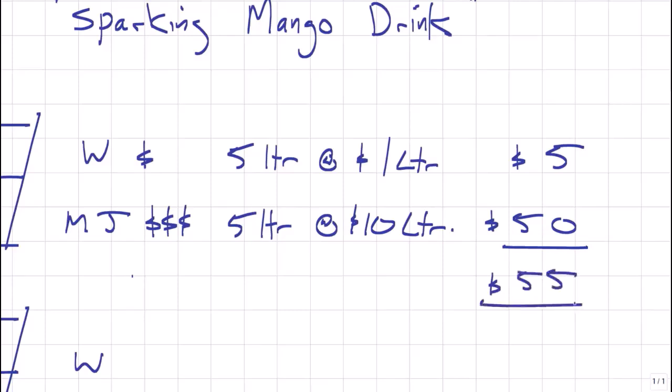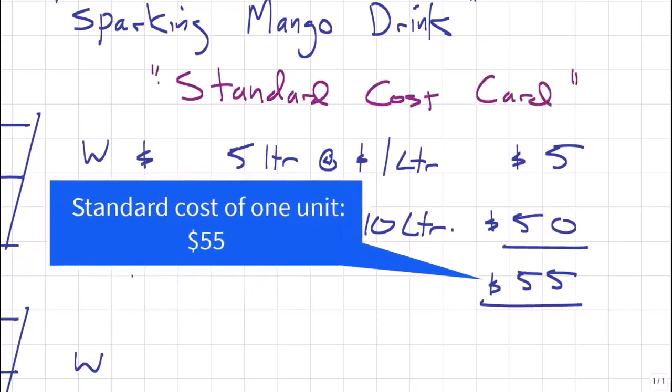So total cost to produce one unit of sparkling mango drink or one glass of sparkling mango drink is $55. Everybody, that is an important concept. That is the standard cost card, the budget for one unit.